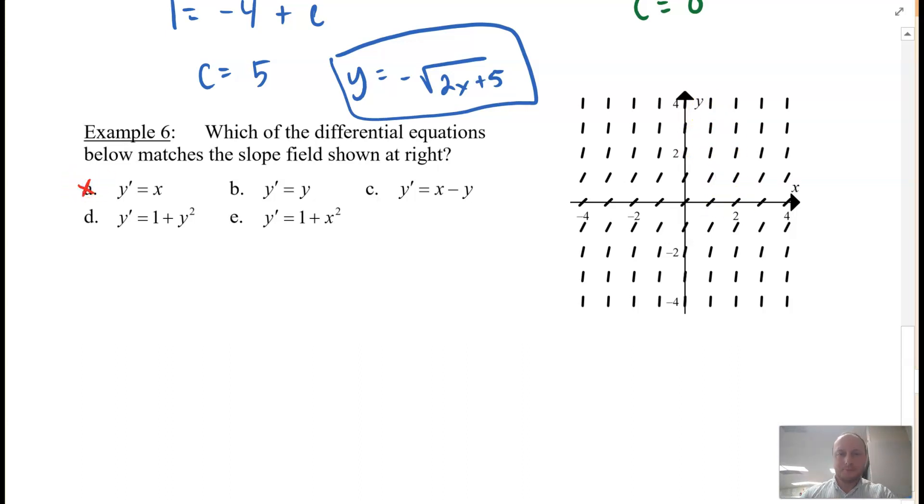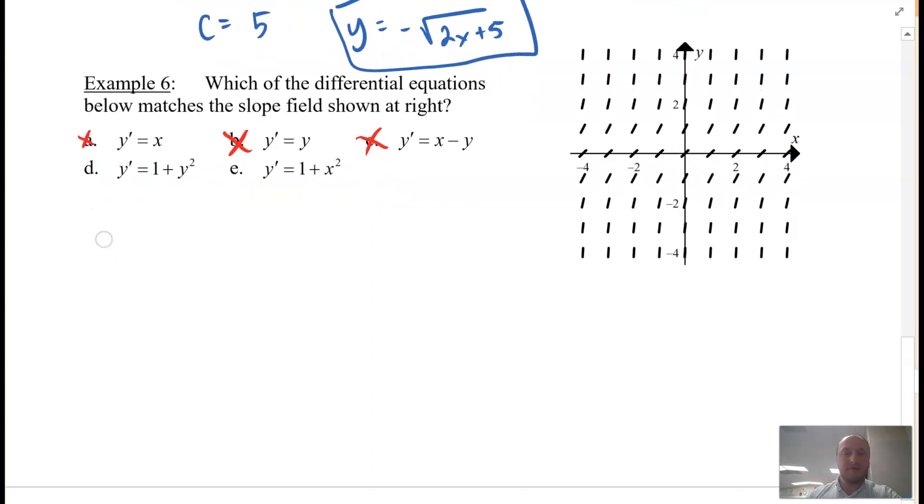Now, how about y' = y? Well, all of these would have to be 0, and they're not, they're about 1. So I can cross that one out. How about x - y? Well, 0 - 0 at this point, that kind of negates that option. So right away, I can throw that one out.